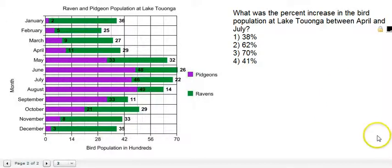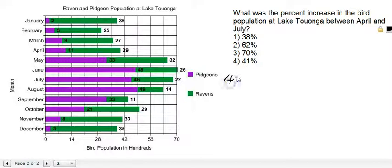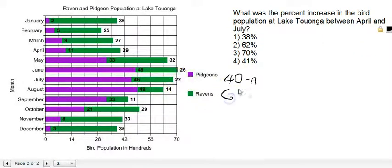So what was the percent increase in the bird population at Lake Taronga between April and July? The first thing we want to do is find out what was the bird population in April. There was 11 and 29, so that is 40. We're just going to put 40 there with A for April. Then the second thing we want to know is July — July is 46 and 22, so that's 68. I'm going to spell out the word July just so we don't get that J confused with June.